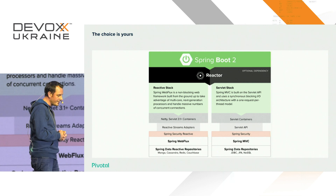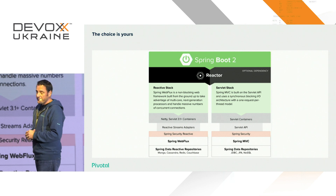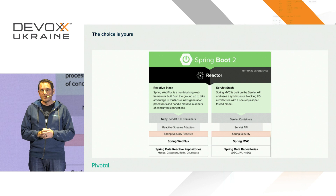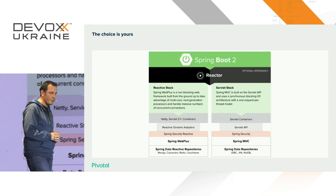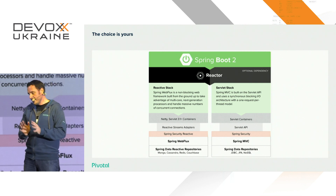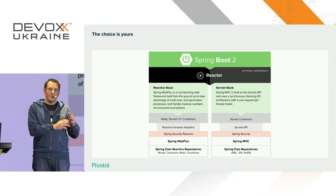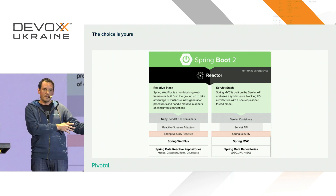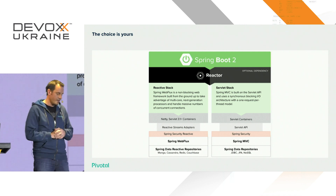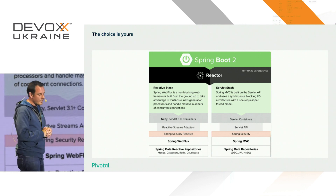Of course, no reason to remove what you already use. So if you're using Spring MVC with a servlet contract — an imperative model where you have one thread per connection, one thread per request basically — that mechanism still exists. There's no plan whatsoever to remove support for that. So we've been telling you a lot with Spring Framework 5 and Spring Boot 2: you have now two options.